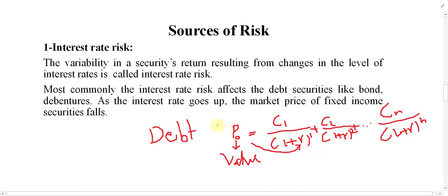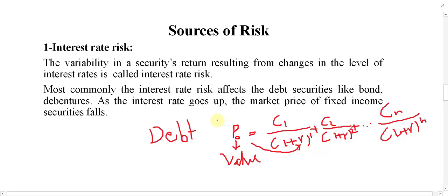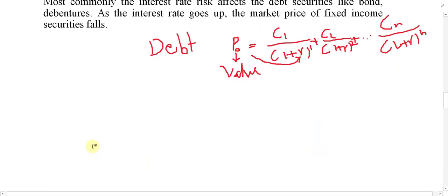That is why interest rate risk is usually common in the case of debt securities, especially bonds. If you purchase a bond from the market and the rate of interest increases, the value of the bond decreases. This is called interest rate risk. Let me give you one more example — the example of a bank, specifically a bank by the name of Azizi Bank.